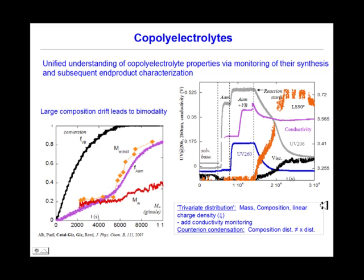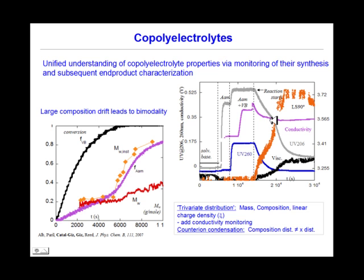Shown on the right is raw data for this reaction: solvent level, acrylamide, and comonomer signals from UV, conductivity, another UV wavelength, and light scattering and viscosity for the comonomer baseline. As the reaction proceeds, scattering increases, viscosity increases as well, whereas conductivity and UV signals decrease as the monomer is consumed.